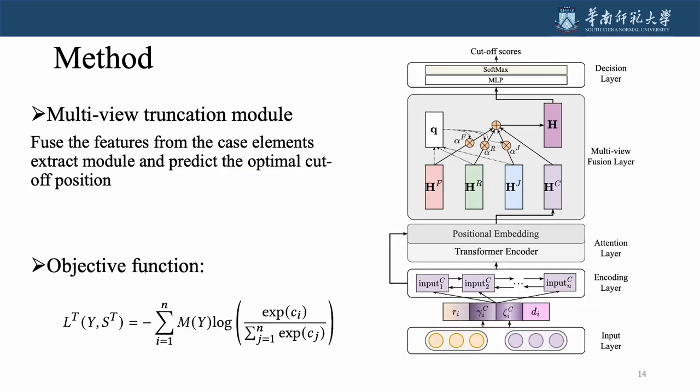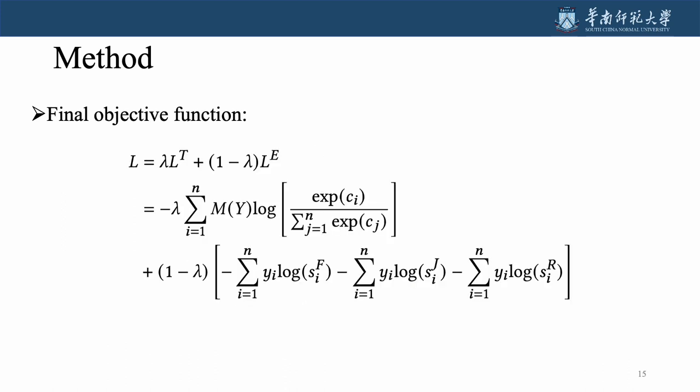Then, Myocut uses a multi-view truncation module to identify and incorporate the most informative view into truncation decision-making. We combine functions as the final loss function, and lambda is the coefficient to balance importance between the extraction loss and truncation loss.